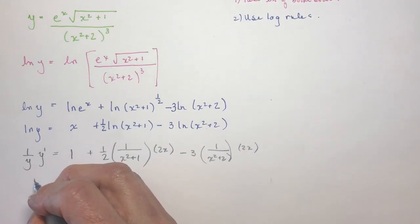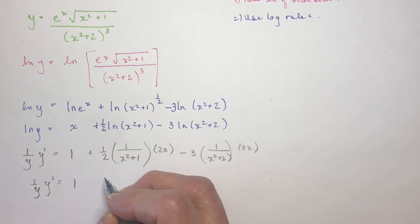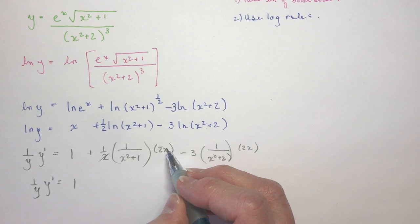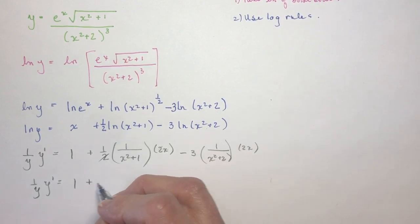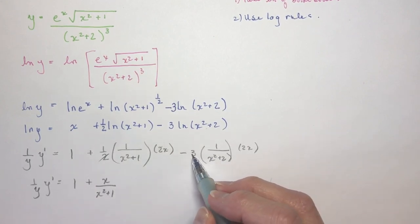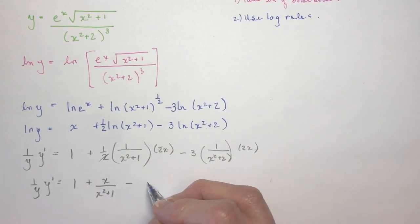So now I have to simplify. So I have 1 over y, y prime equals 1. This 2 will divide into this 2. That leaves me with an x in the numerator over x squared plus 1. And here now I have minus 3 times 2x. So that's going to be minus 6x all over x squared plus 2.